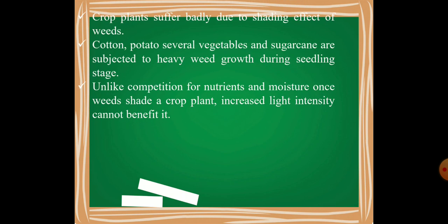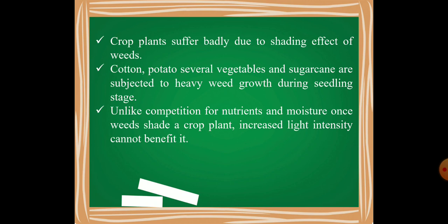Crop plants suffer badly due to the shading effect of weeds. If there is a dense weed population, the shading effect reduces light interception by crop plants, hampering photosynthesis, so dry matter and biomass do not develop well. Crops like cotton, potato, several vegetables, and sugarcane are subjected to heavy weed growth during their seedling stage. Unlike competition for nutrients and moisture, once weeds shade a crop plant, increased light intensity cannot benefit it — unless the shading effect is removed.